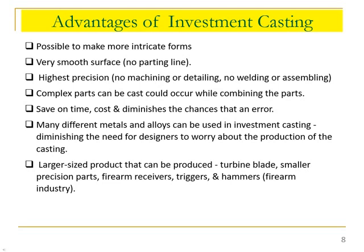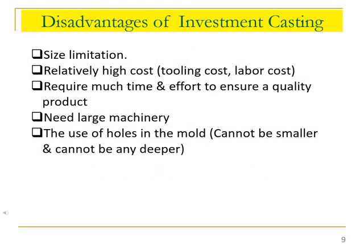Many different metals and alloys can be used in investment casting, reducing the need for designers to worry about production constraints. A larger product example is turbine blades with complex shapes for power generation industries. The firearm industry is another example — smaller precision parts such as firearm receivers, triggers, and hammers can be cast. However, one of the biggest disadvantages is size limitation; usually only smaller castings up to about 113 kilograms can be made using this process.